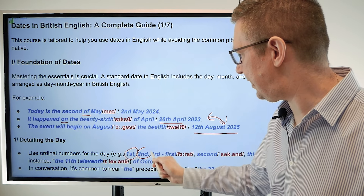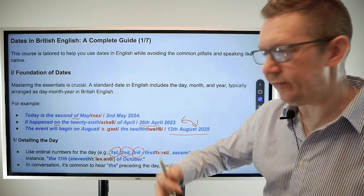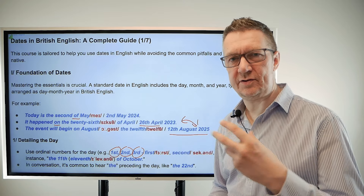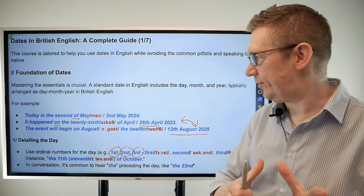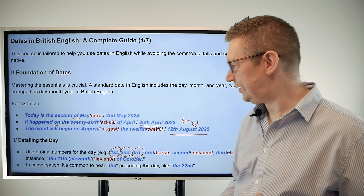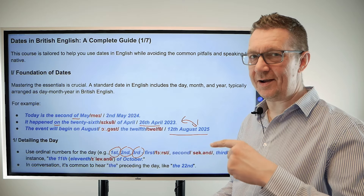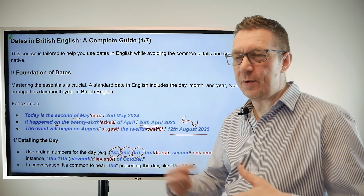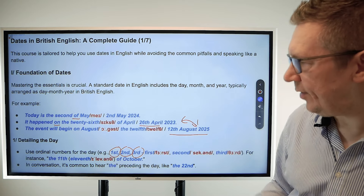When detailing the day, we use ordinal numbers: first, second, third, and so on. For example, 'the second of March' or 'the 11th of October.' Pronunciation can be quite difficult — 'seventh' is quite a mouthful, so just practice it. 'The 11th' is also tricky. The worst one is 'sixth' — very difficult even for a native speaker. We say it quite quickly: 'six' — it's actually hard to say slowly and correctly.